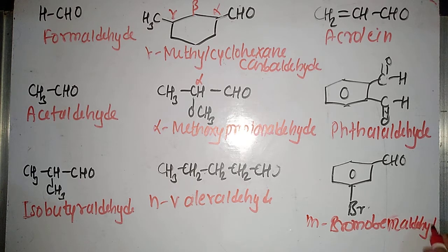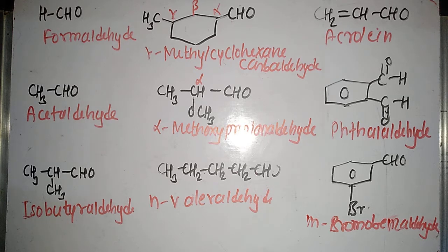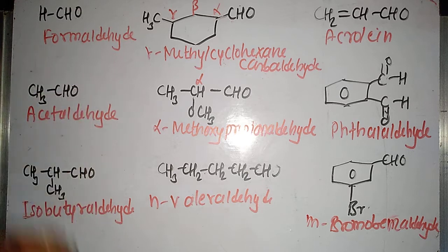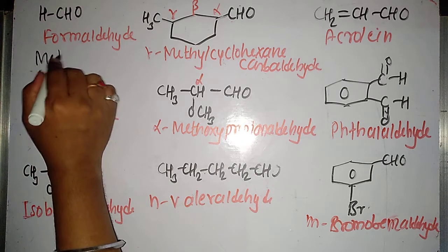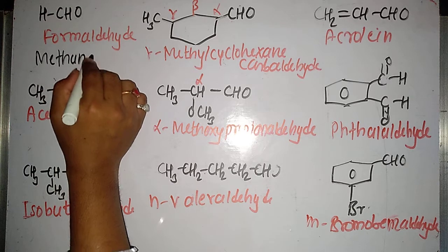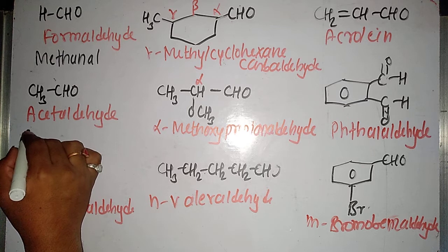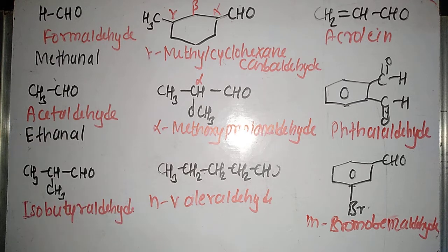Now we will see the IUPAC names of aldehydes. For the IUPAC name, you have to count the number of carbon atoms in the longest chain and accordingly identify the parent alkane. If the total number of carbon atoms is 1, the alkane is methane. You replace the 'e' of the alkane with 'al', so the name becomes methanal. Here we have a total of 2 carbon atoms — the 2-carbon alkane is ethane — and the name becomes ethanal.